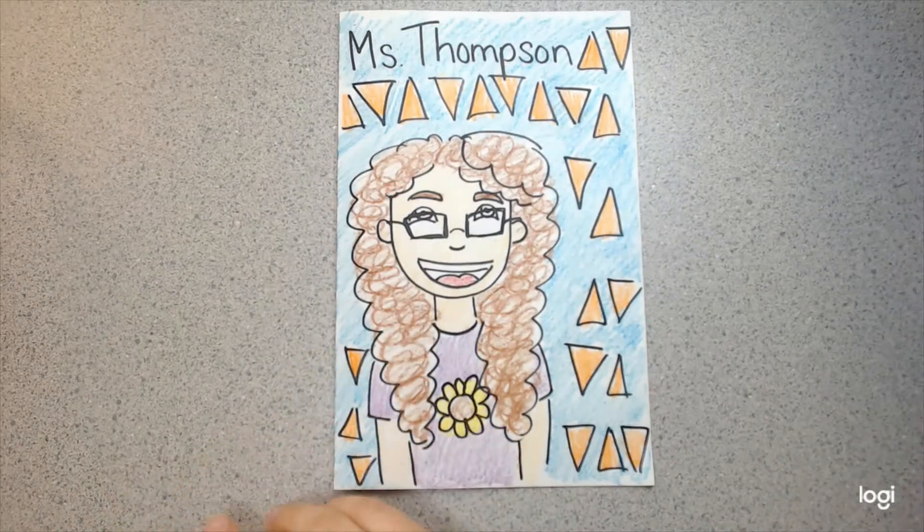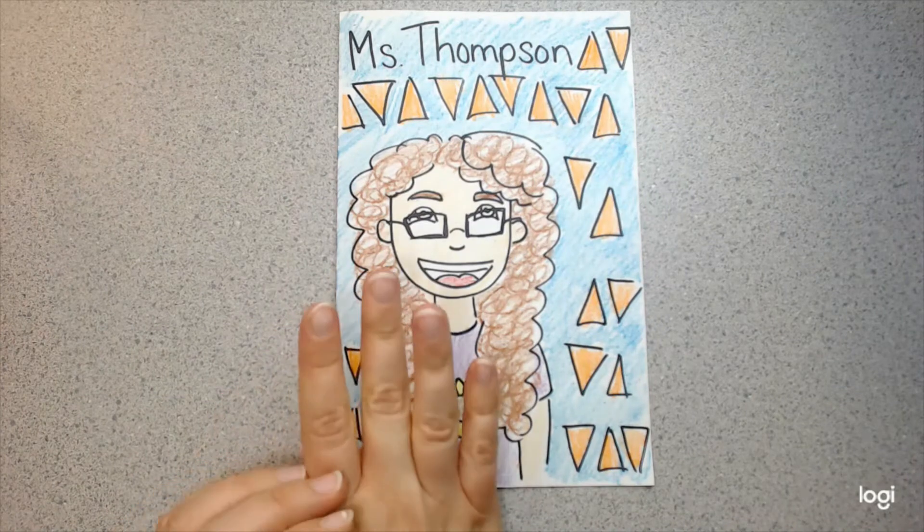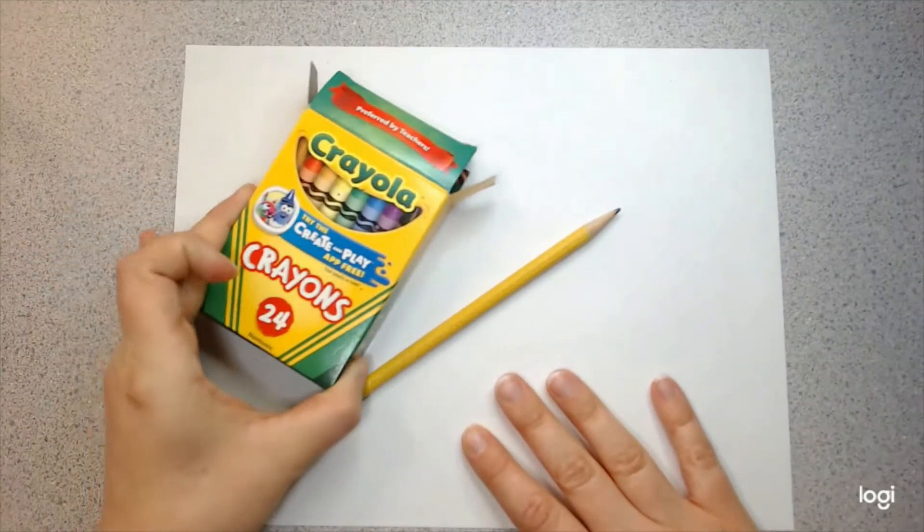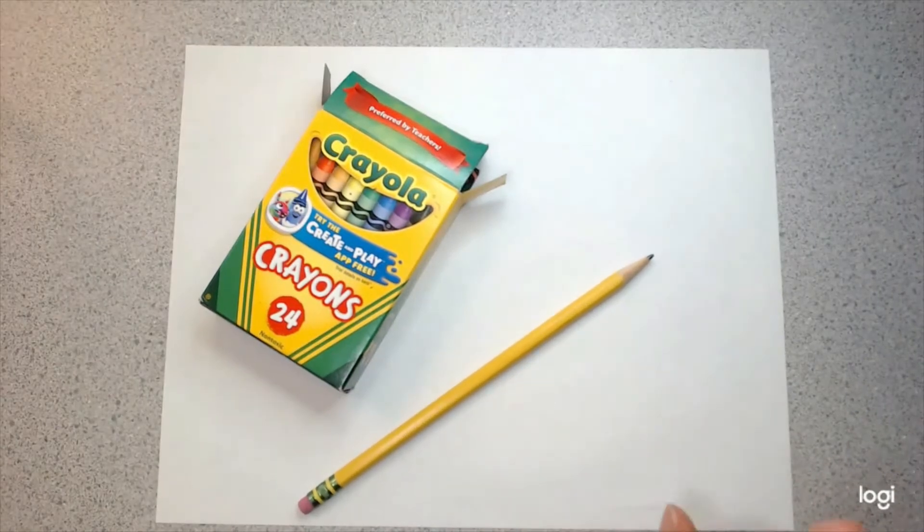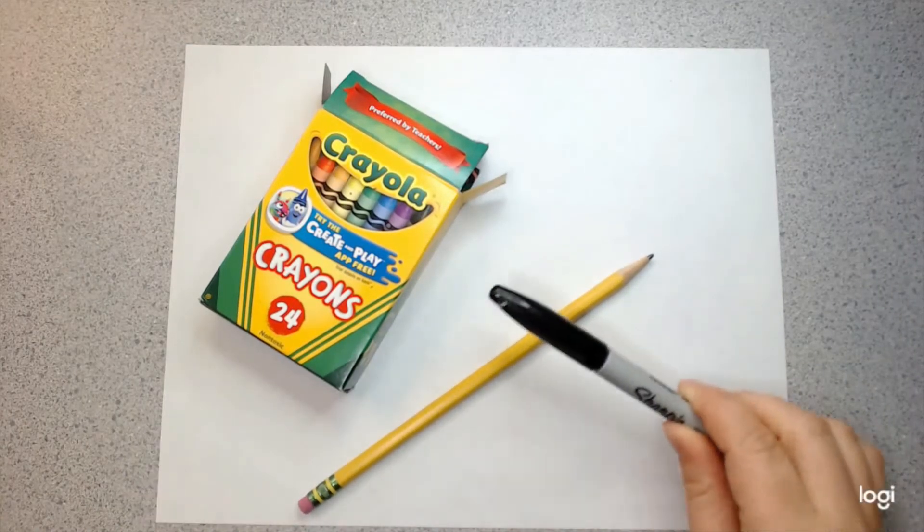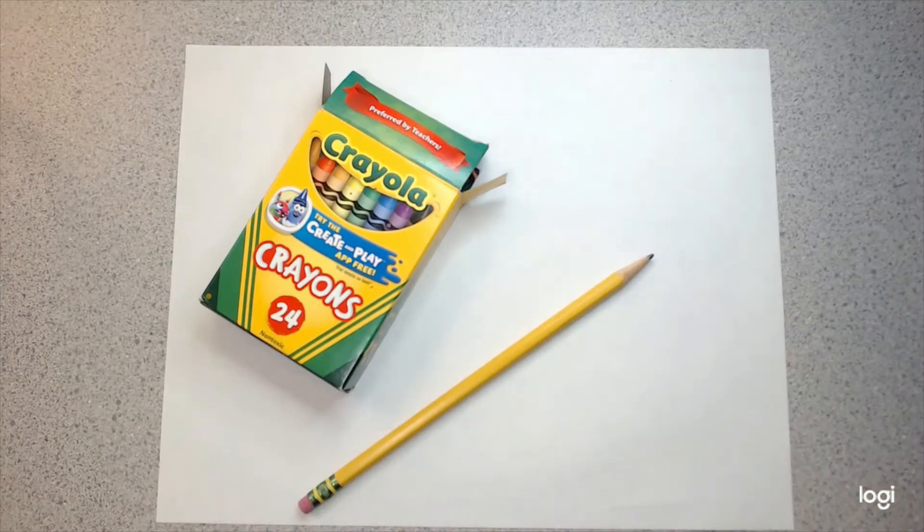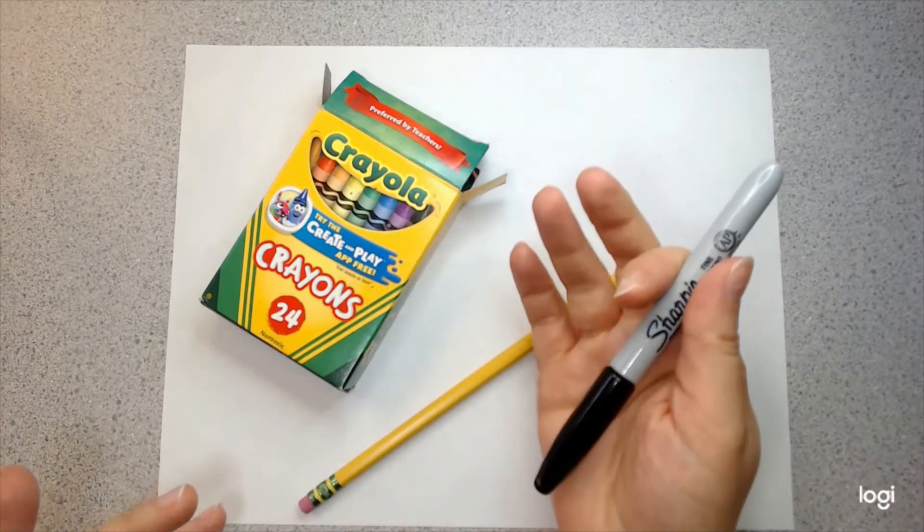You're going to need some supplies for our project today. You're going to need a piece of paper, a pencil, some crayons, and if you want, you're going to need a marker. Now, you can use a Sharpie or you can just use a Crayola marker. It's up to you.